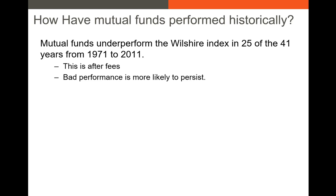Now, on to past performance of managed funds, namely mutual funds. How have mutual funds performed historically? Depending on how you measure it, you could say that mutual funds as a whole have underperformed in the last 40 or 50 years. There's a study that looked at the mutual fund industry as a whole and compared the performance to the Wilshire 5000 index, finding that in 25 of 41 years over this time period, 1971 to 2011, they underperformed after you take out fees.